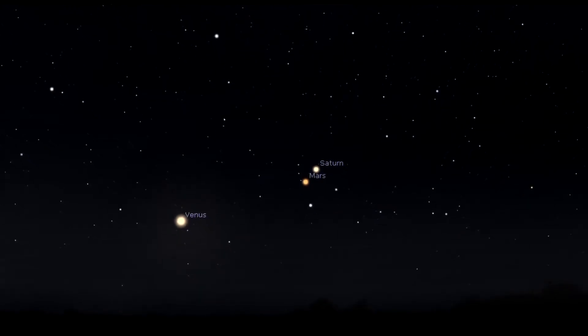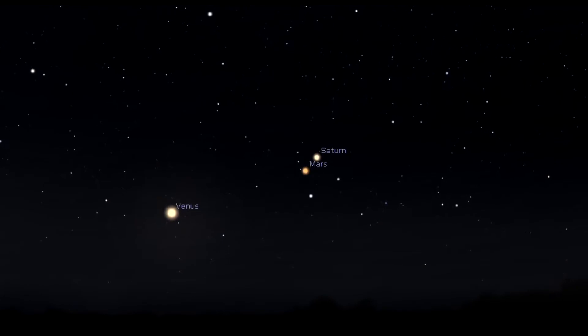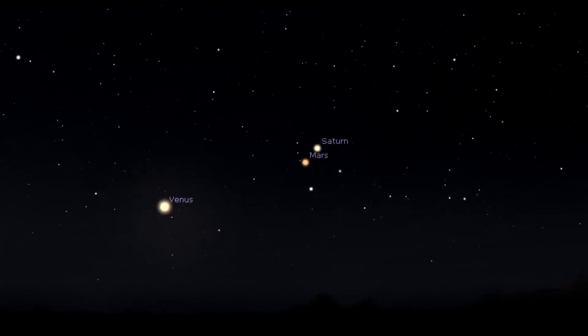Early in the month, by around 5 a.m., you can catch Venus, Mars, and Saturn in the southeastern part of the sky.